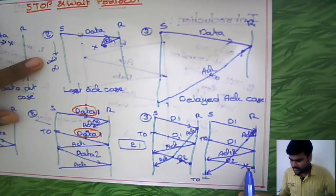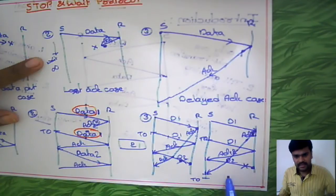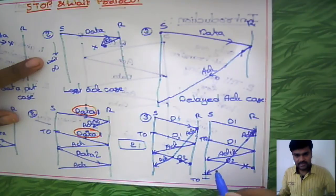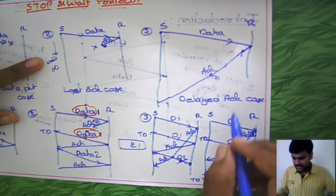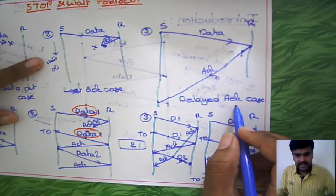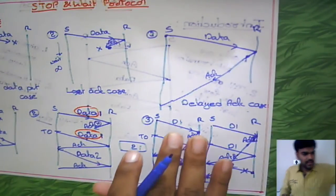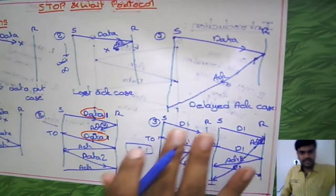The sender will wait till timeout occurs, then retransmit data packet 2 if it is not getting acknowledgement for that. This way the delayed acknowledgement case is solved. There is one thing we must consider regarding the acknowledgement sequence number case.